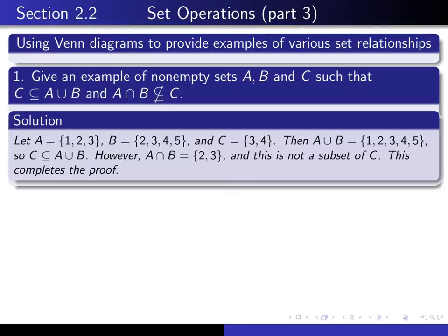So we calculate then A union B is equal to this. And so, therefore, C really is a subset of that. But on the other hand, A intersection with B, A intersect B is equal to 2, 3, as you can see from here. And this is not a subset of C. Because it contains 2, and 2 is not an element of C. So this completes the proof.